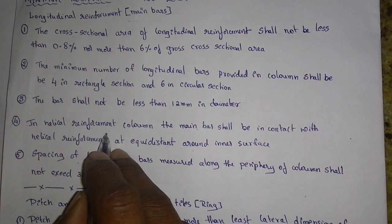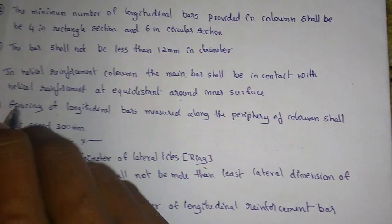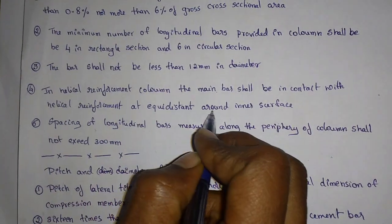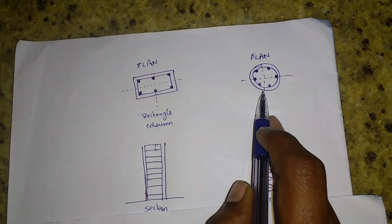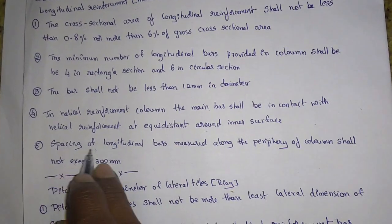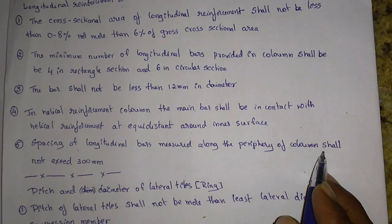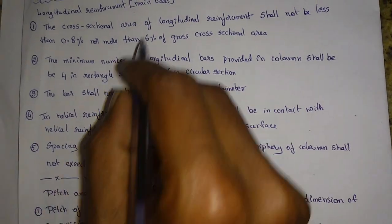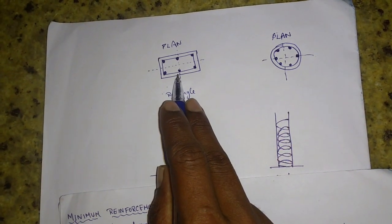In a helical reinforcement column, the main bars shall be in contact with the helical reinforcement at equidistant points around the inner reinforcement — the distance between the main bars should be the same and should not vary. The spacing of longitudinal bars measured along the periphery of the column shall not exceed 300mm.